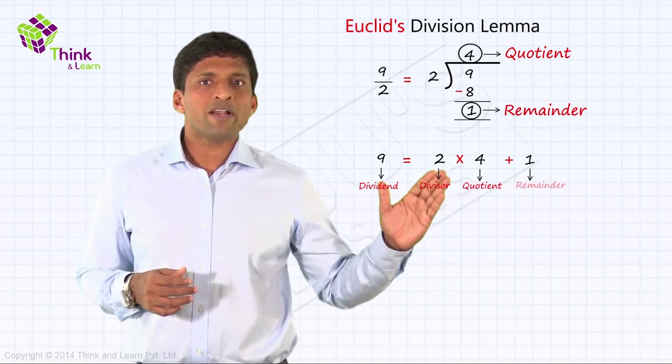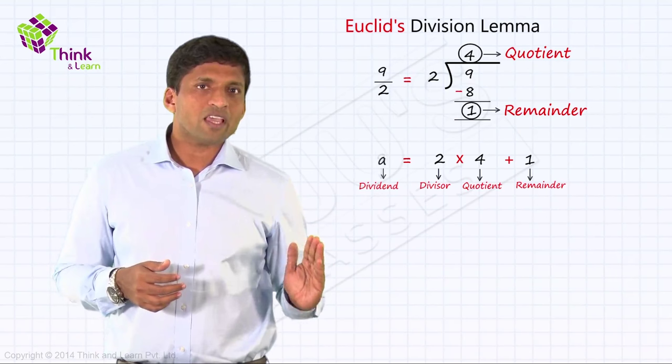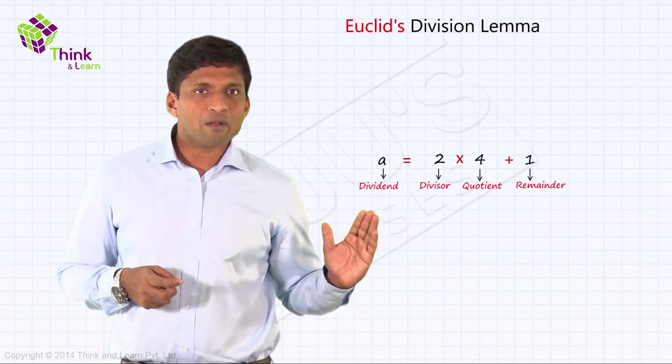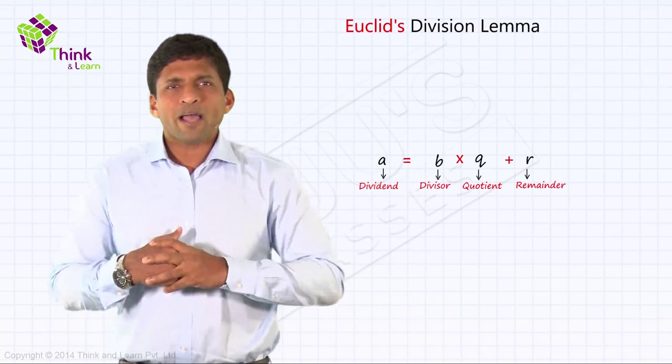Now instead of using numbers, if I replace it by variables, let's take instead of 9, I can take A. Instead of the divisor 2, if I take B, and 4 which is the quotient, I can write Q itself, and the remainder 1, I'll replace it by R. Now I'm trying to generalize so that we can write this using variables.